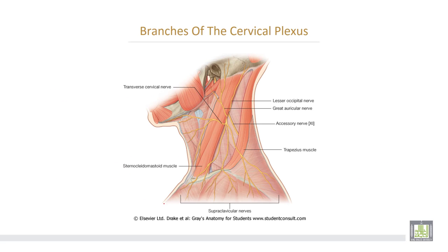This is the supraclavicular nerve — anterior, posterior, and middle branches. This is the lesser occipital nerve, the great auricular nerve, the transverse cervical nerve, and the accessory nerve.